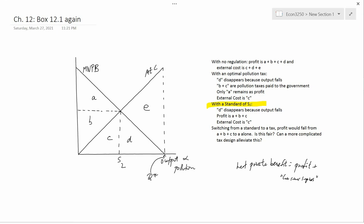How about with the standard? In terms of profit, I claim that profit is a plus b plus c. d disappears again because even under the standard the output falls, and so that amount of output is not produced. But you still have a plus b plus c.